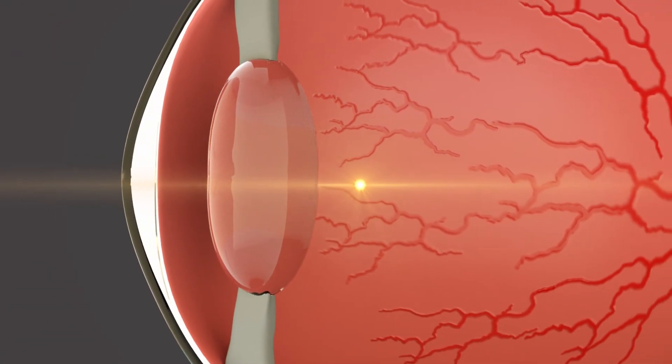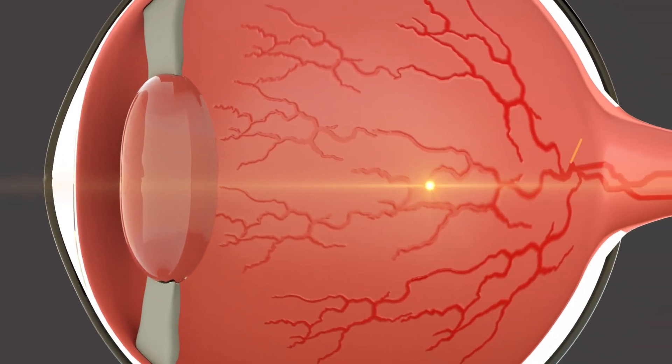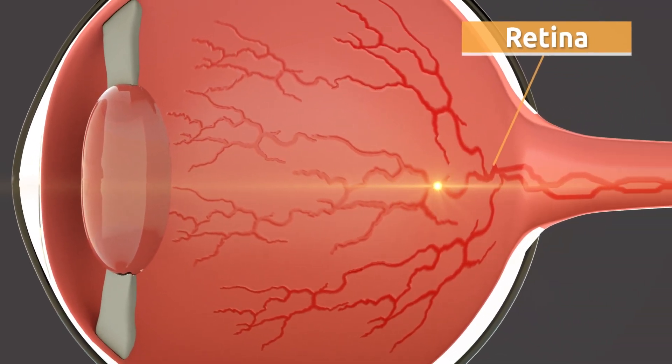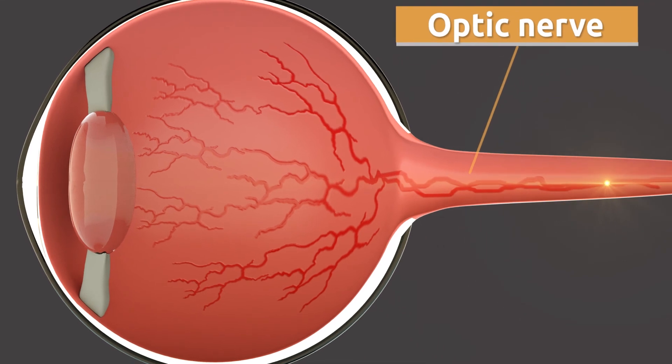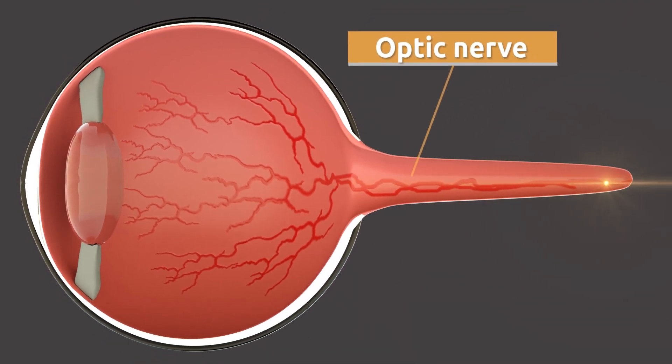The retina is located at the back of the eyeball. It receives light and transmits this information through the optic nerve. The optic nerve carries the information to the brain, which is in charge of recognizing and comprehending what our eyes are able to see.